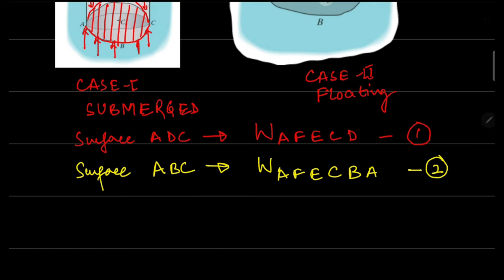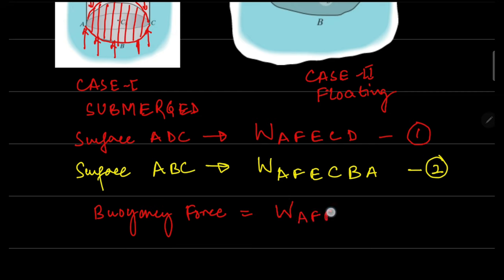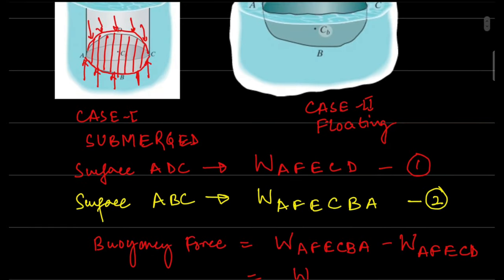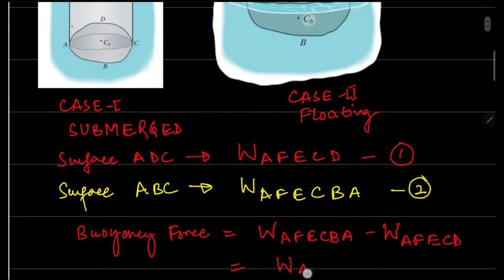That net force — the difference of equation two and equation one — is equivalent to the weight of the fluid contained inside the imaginary volume between the two surfaces. That is your buoyancy force. The buoyancy force equals the weight of fluid contained inside volume ADCBA, and this acts upwards.